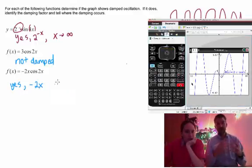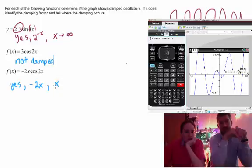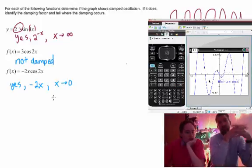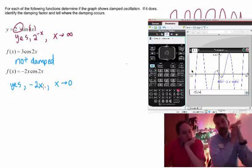And this is the difference between a damping situation which happens at infinity and one which happens at zero. Notice the very middle of this graph is squeezed at zero but expands as you move left and right. So this is where you have a damping at zero, not at infinity.